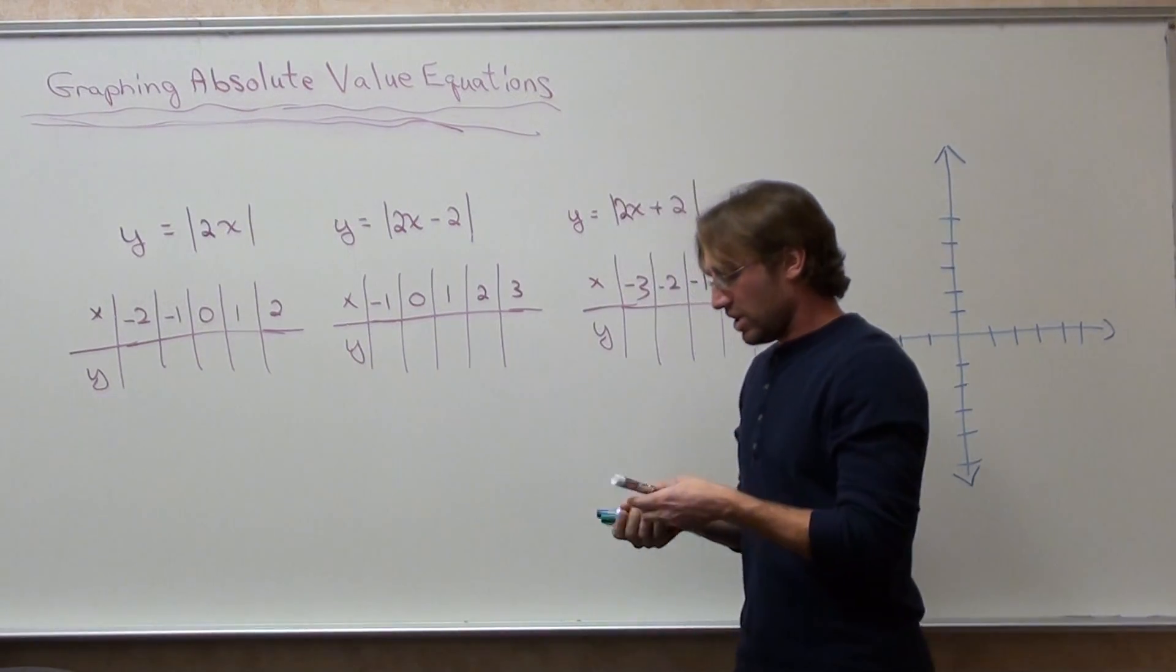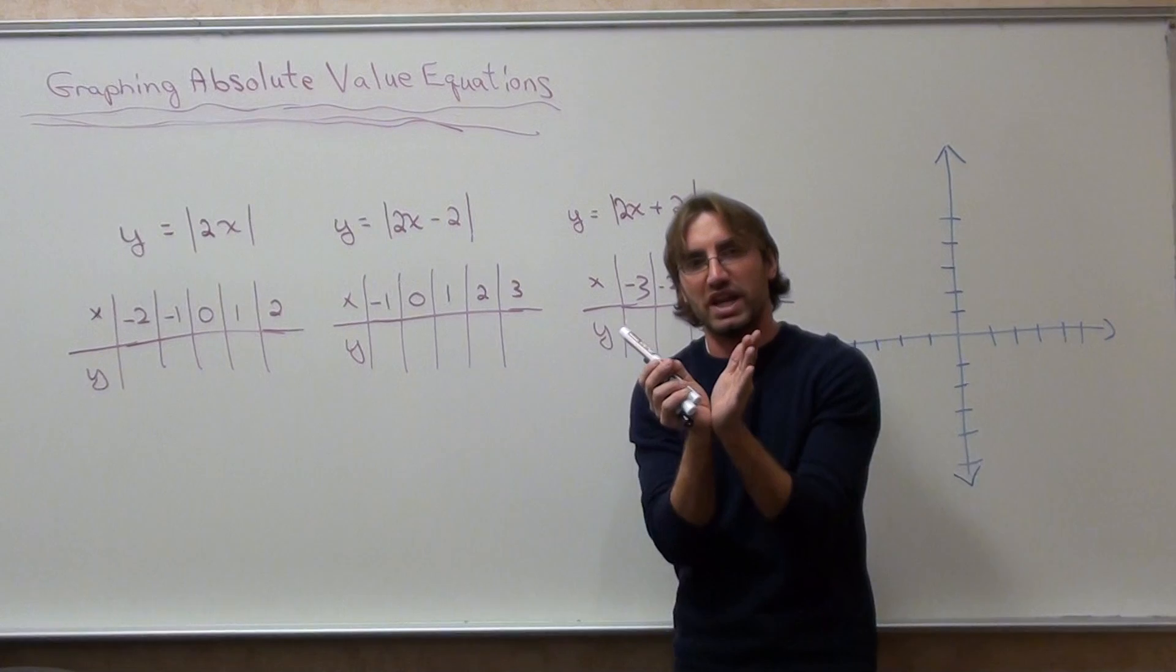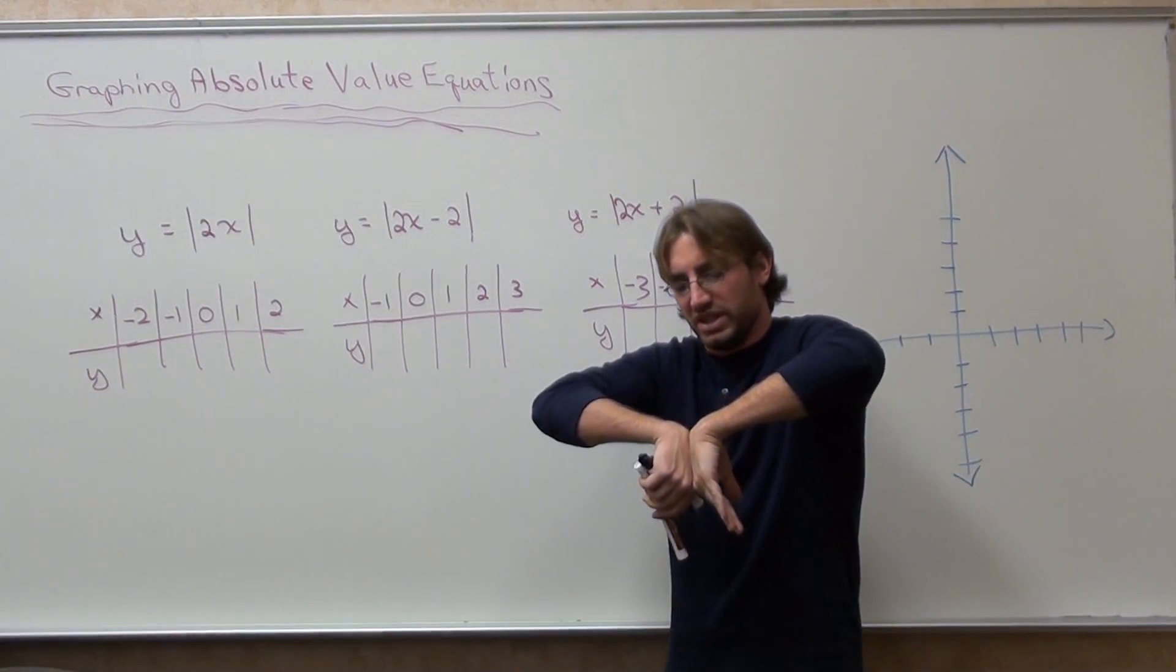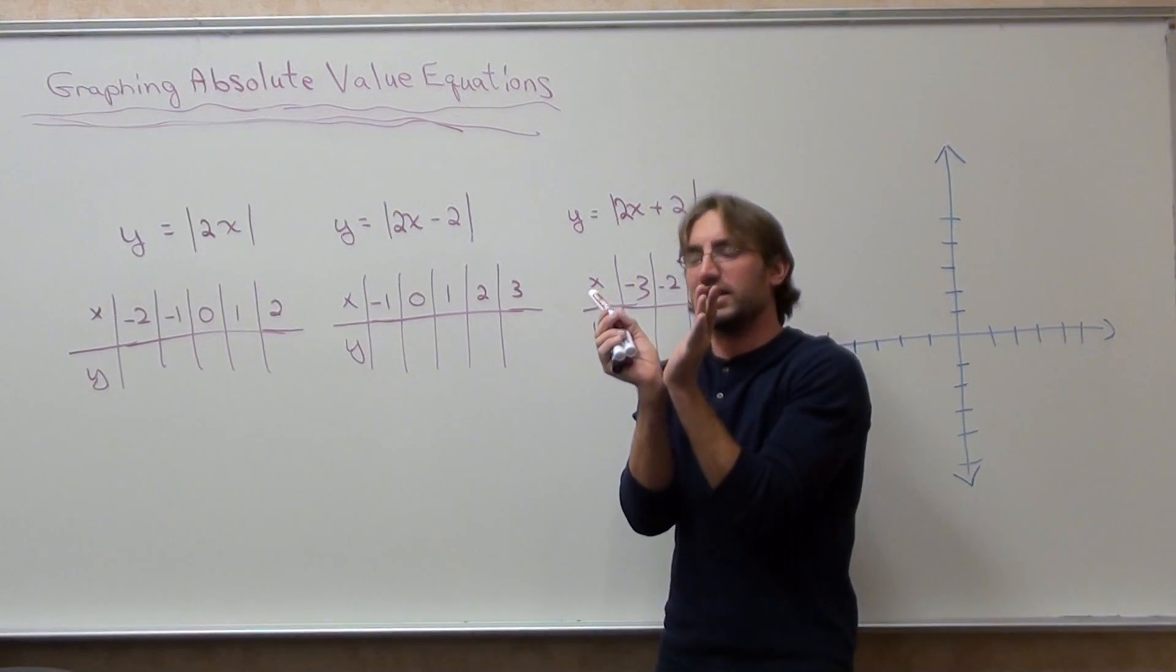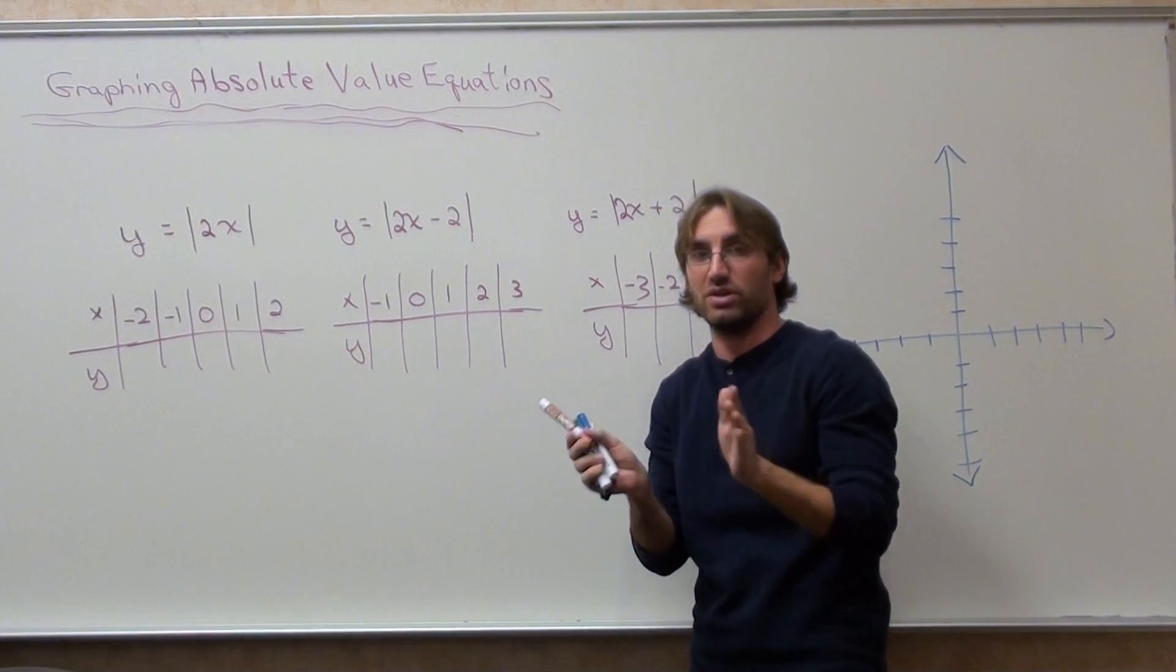In this one, it's a little different. So the vertex is still the same. The vertex is the bottom of the graph. It's up or down, but it's the lowest or the highest point of an absolute value graph, which looks like a v.